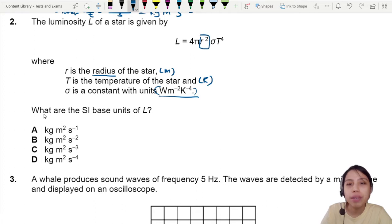Pi does not have units, so the ones that have units are R, sigma, and T. So let's multiply all the units together.